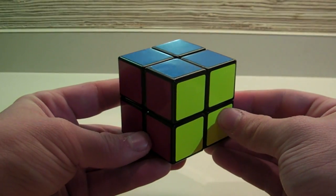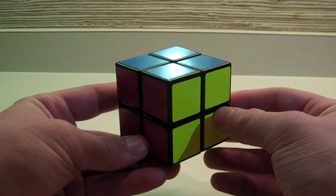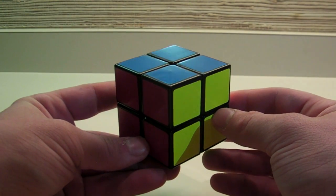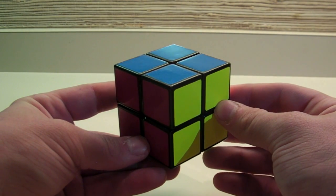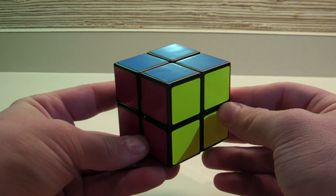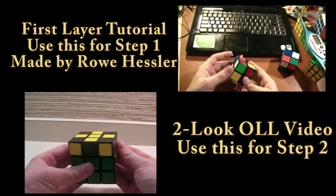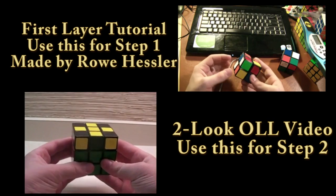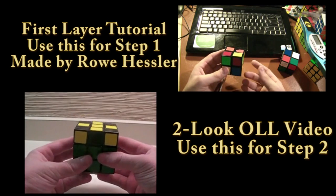And that is how to solve the Rubik's Cube 2x2 using the Ortega method. If you want some tips and tricks on how to more quickly make the first layer, Ro Hessler has made a video on his channel, and I have linked to it in the description below this video. I have also put all of the algorithms mentioned in this video in the description as well for easy viewing.